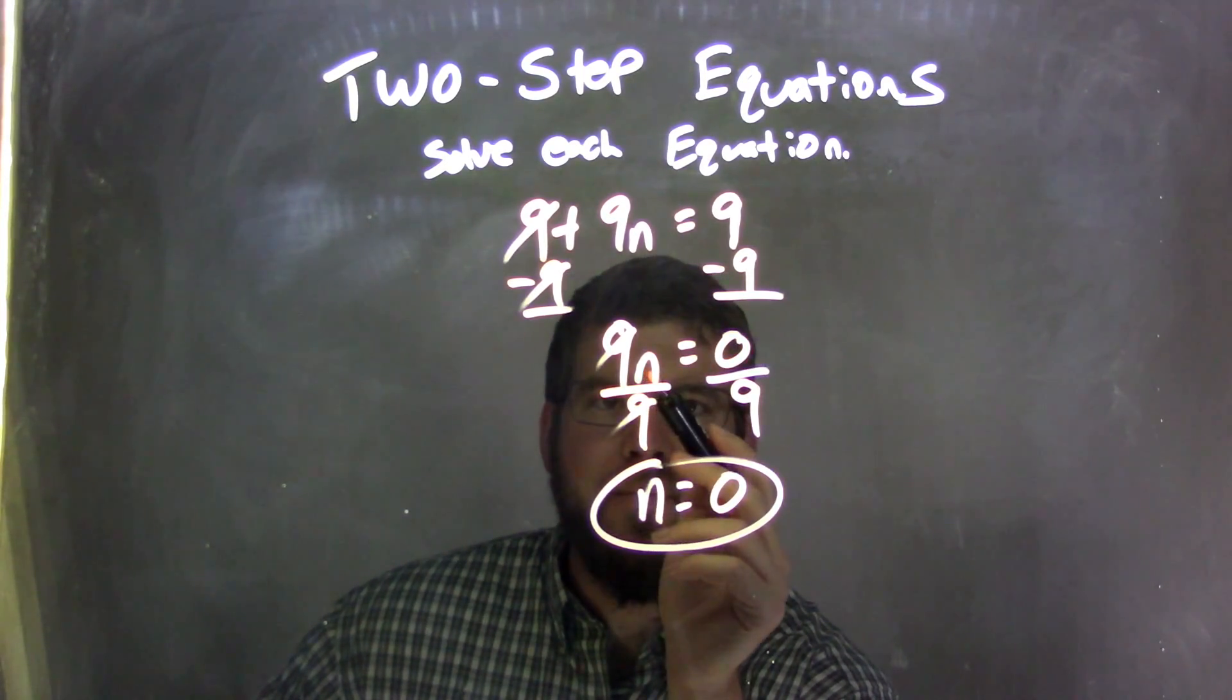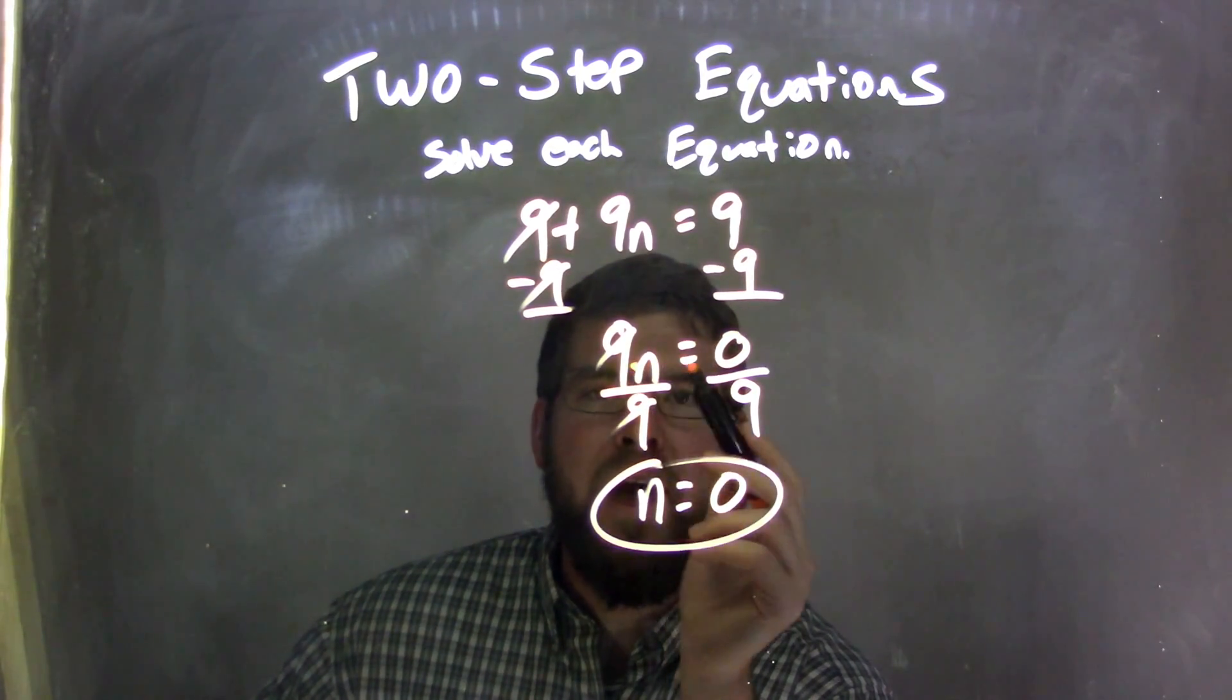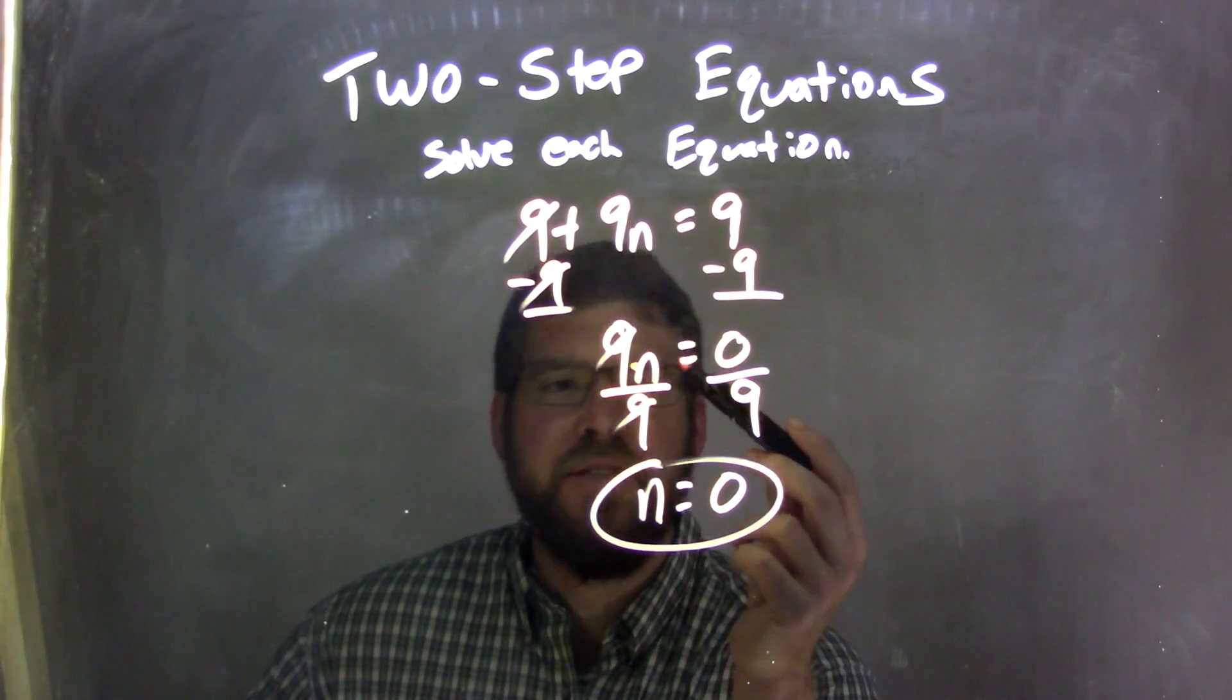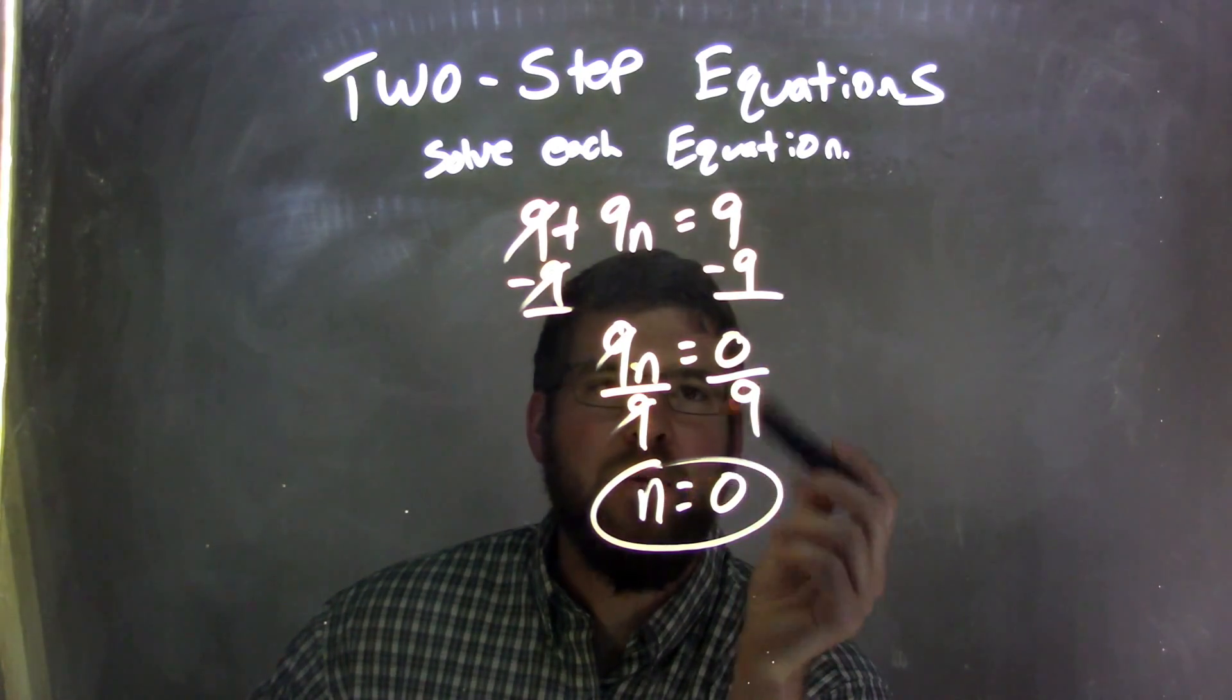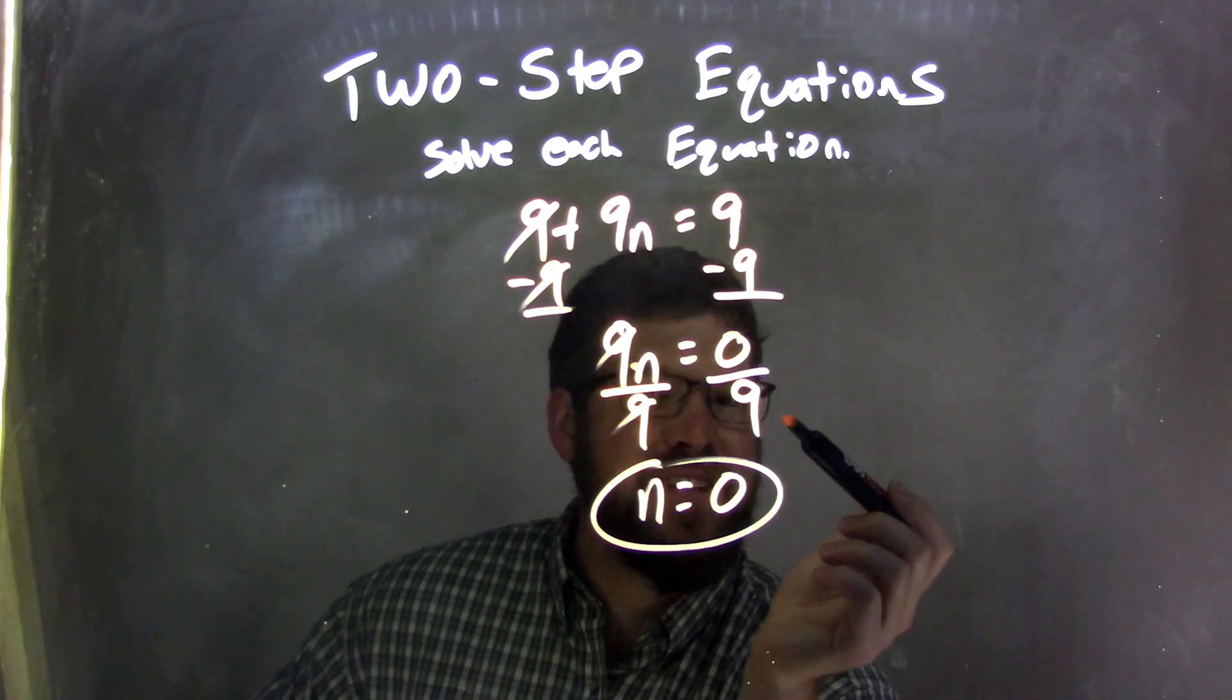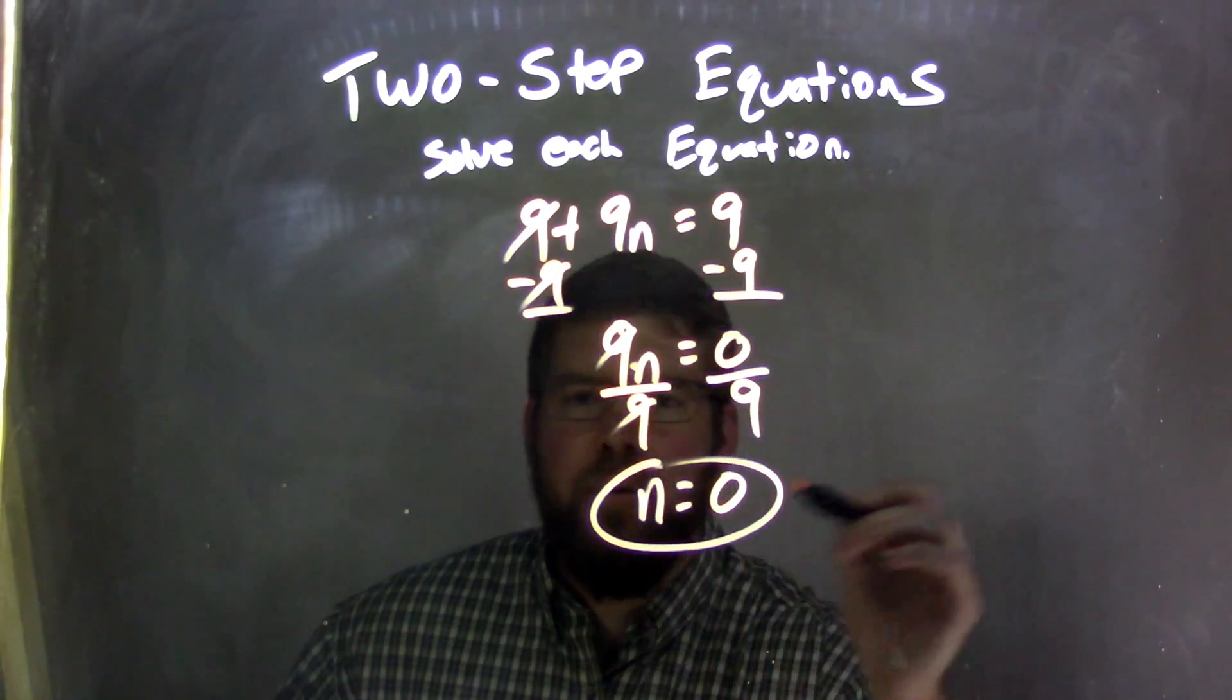And I brought down this 9n. I then saw there's multiplication going on here between the 9 and the n. So, opposite of multiplication is division. So, I divided by 9 on both sides. I'm left with n here equals 0 divided by 9, which is 0, right? And so, we have a final answer here of n equals 0. So, let's go.